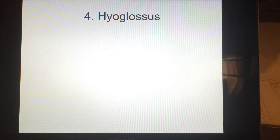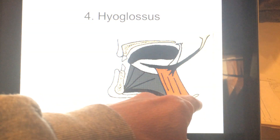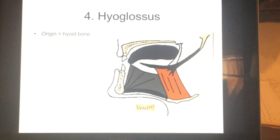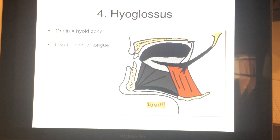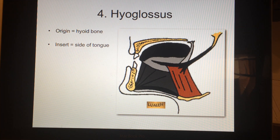The last one for today is hyoglossus. Glossus is tongue — and hyo refers to the hyoid bone. Here's the hyoid bone in the picture; notice the origin is down below the insertion. So the origin is the hyoid bone and the insertion is the side of the tongue.